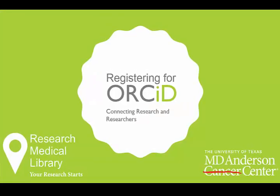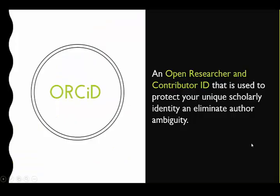In this quick video, I'm going to show you how to register for an ORCID. An ORCID is an Open Researcher and Contributor ID. This is a 16-digit ID that you can use to link to your published works. An ORCID is a registry of unique identifiers for researchers and scholars.